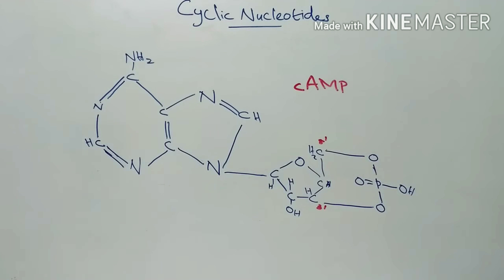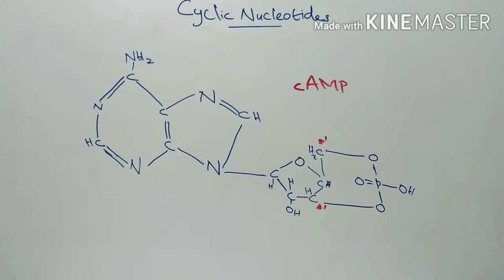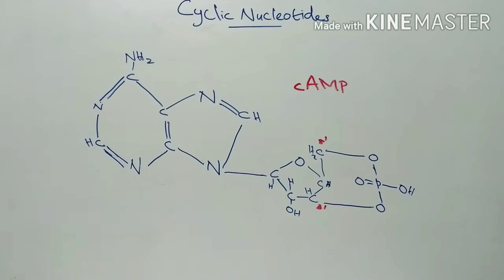Let's discuss cyclic nucleotides. In this we will see cyclic AMP and cyclic GMP. Cyclic AMP was first discovered as a mediator in hepatic glycogenolysis. Cyclic nucleotides mediate the effects of a variety of hormones and other biologically active agents.